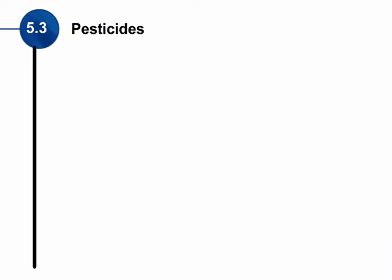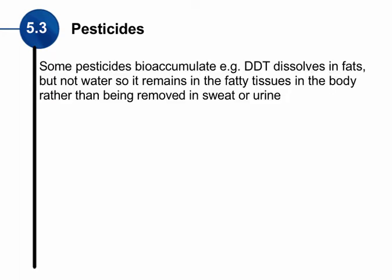Let's look at some of these pollutants. First, pesticides — used to get rid of pests, animals or species that are pests. Some pesticides bioaccumulate, and one example is DDT, which has been banned in our country. DDT and many other pesticides dissolve in fat tissues, not in water. This means that once the pesticide gets inside an organism, it remains in the fatty tissues of the body and cannot be removed through sweat or urine. This type of pesticide can be very harmful as it works its way up the food chain.